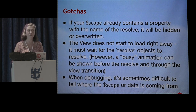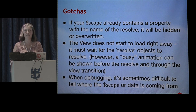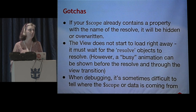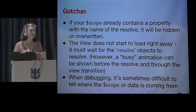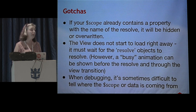When debugging, it's sometimes difficult to tell where that scope or data is coming from. At Smashing Boxes we work on a really large client project, and that was the first time I had seen this resolve pattern. When I first started using it I found it very difficult to debug things — looking at a controller trying to figure out where the data was actually being passed in from. Once you're familiar with it, though, all you have to do is go look at the state definition for that page and that's pretty much it.